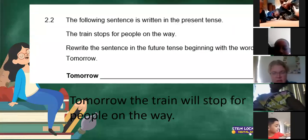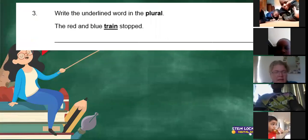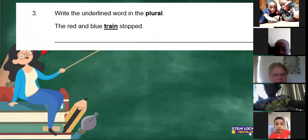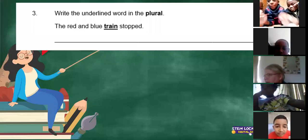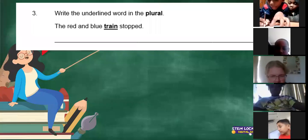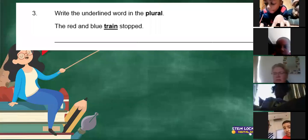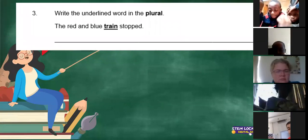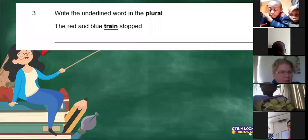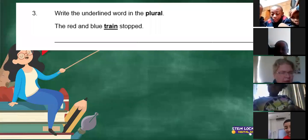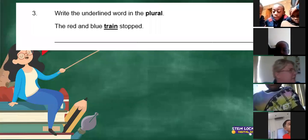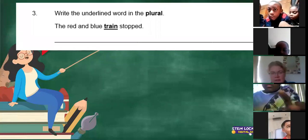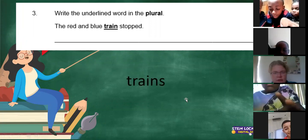Write the underlined word in the plural. What is a plural, guys? A plural is for more than one. You've got one person and then you've got more than one person. So you've got one train or you've got more than one? Trains, yes. I can see people writing — Taryn, Homotso, Ziad are writing trains. You grade 3s are way too smart. Trains is the answer.